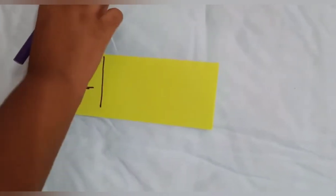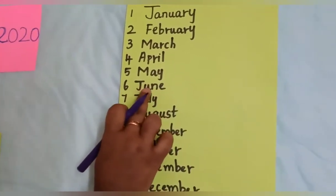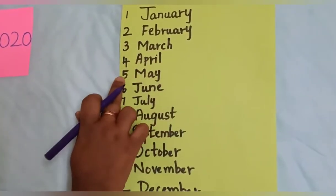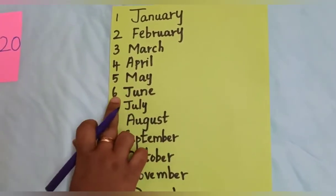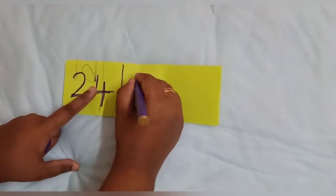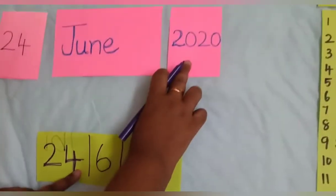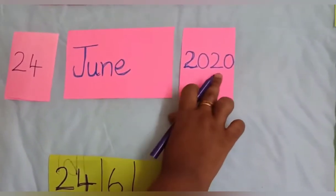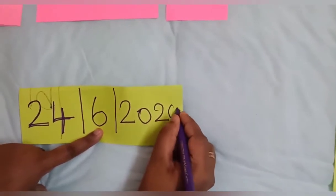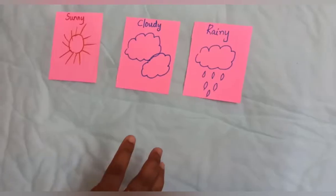After putting the big standing line, what do we have to put? What is the month? This month is June. Let's see in the months of the year where June comes. The first month is January, second is February, third is March, fourth is April, fifth is May, and the sixth month is June. So June is number six. We put six, then another big standing line, and then the year 2020. So the date is 24/6/2020.